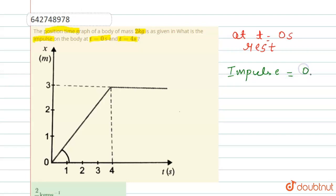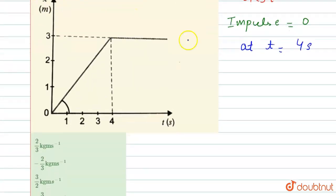Now we will find at t equals 4 seconds. At this point, t equals 4 seconds, velocity equals distance by time, that is 3 by 4 meter per second.